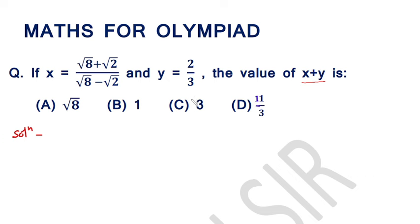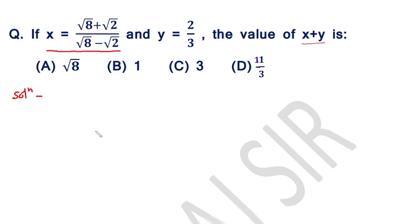First of all, we have to simplify this equation: x is equal to square root of 8 plus square root of 2 over square root of 8 minus square root of 2. When we get the simplified value of x, then it will be very easy to calculate the value of this expression. So first of all, we will simplify this equation and get the simplified value of x.